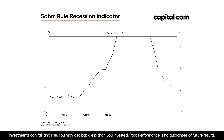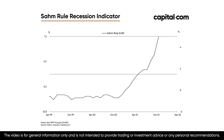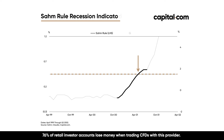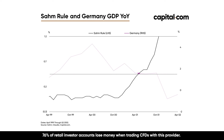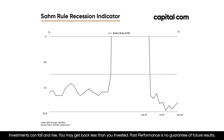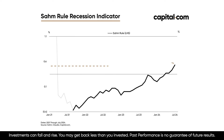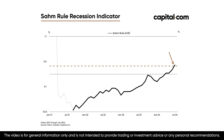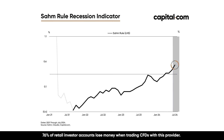If we rewind just seven years earlier to April of 2001, this line also crossed above 0.5%, triggering the SOM rule. And just like in 2007, a global recession took place in the year that followed. Fast forward to today, the SOM rule has triggered once again, making many investors concerned about the future of the global economy. The question is whether the SOM rule is going to be a reliable recession indicator this time around.